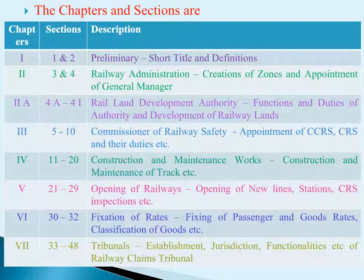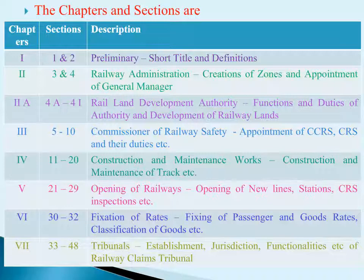Chapter 3: Commissioner of Railway Safety has six sections, Sections 5 to 10. These sections cover the appointment of CCRS and CRS and their duties.